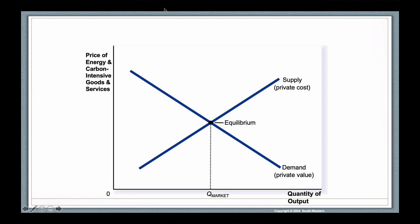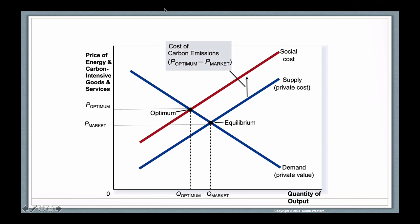And it would be an equilibrium, but it would not be a socially optimal equilibrium because we know that carbon emissions impose a cost. So if we take that into account, and again, for simplicity, let's just assume that carbon emissions come from the production of energy and carbon intensive goods and services, then we would see a much higher social cost and the optimal level of production would actually be much lower.